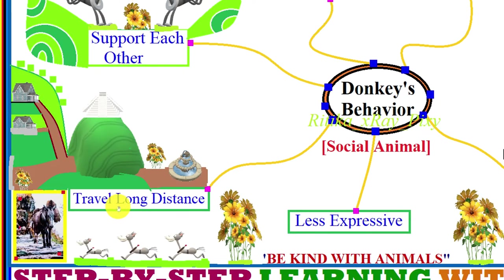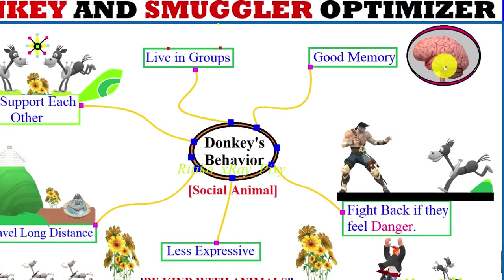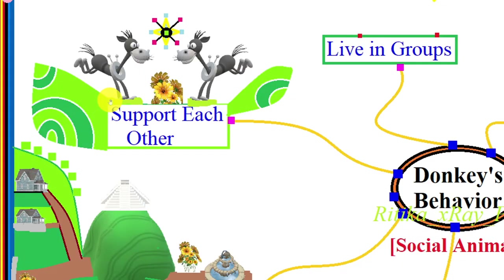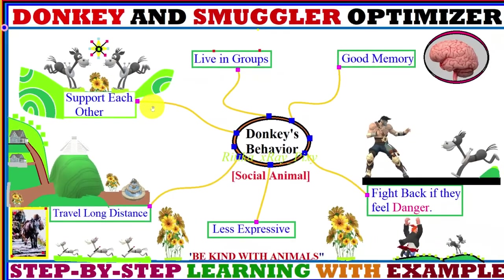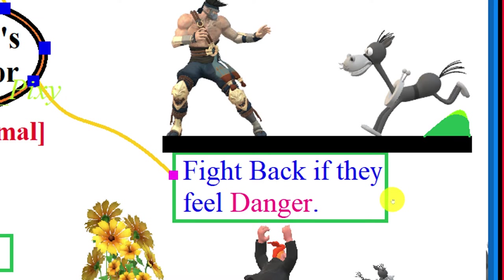Donkeys can travel long distances even without their owner's guidance because they have very good memory and can remember familiar routes. They are very friendly and easily mix up with other animals and with each other, and they support each other in difficult times.